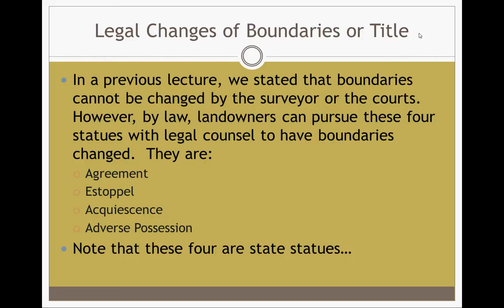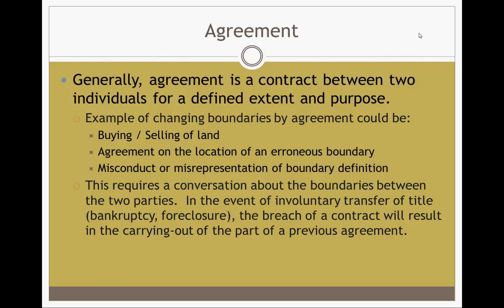When we talk about legal changes of boundaries, we talk about how the law can change where boundaries go. Boundaries cannot be changed by the surveyor or the courts, but by law, landowners can pursue these four statutes with legal counsel to have boundaries changed: agreement, estoppel, acquiescence, and adverse possession. These four are state issues — each state has a different way of dealing with them. Adverse possession in Mississippi is 10 years; in some states it's more, in some it's less.